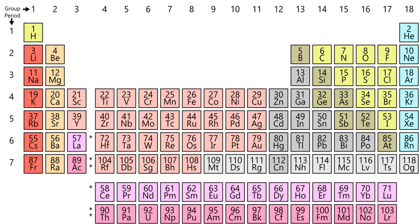Lists of the elements are available by name, atomic number, density, melting point, boiling point and by symbol, as well as ionization energies of the elements. The nuclides of stable and radioactive elements are also available as a list of nuclides, sorted by length of half-life for those that are unstable.